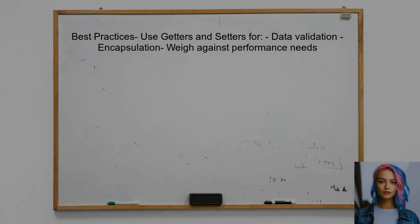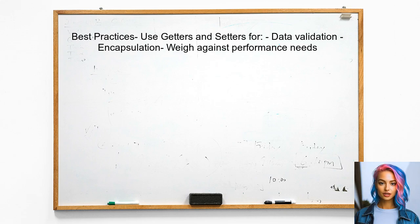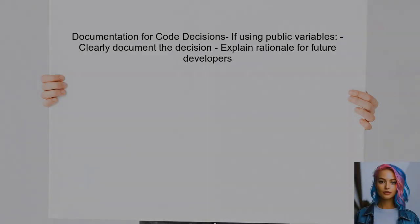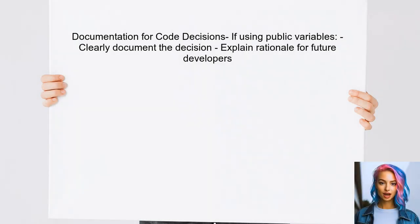Now let's talk about best practices. Weigh the benefits of using getters and setters for data validation and encapsulation against the need for performance. In many cases, using getters and setters is recommended for better code quality. If you decide to use public variables for performance reasons, document this decision clearly in your code so future developers understand the rationale.